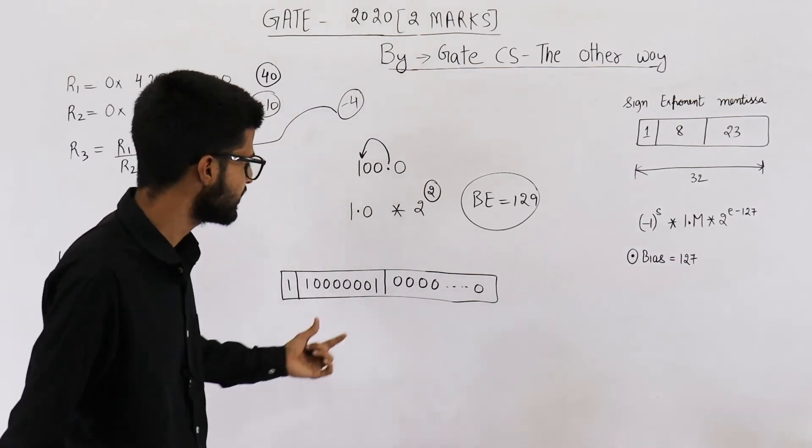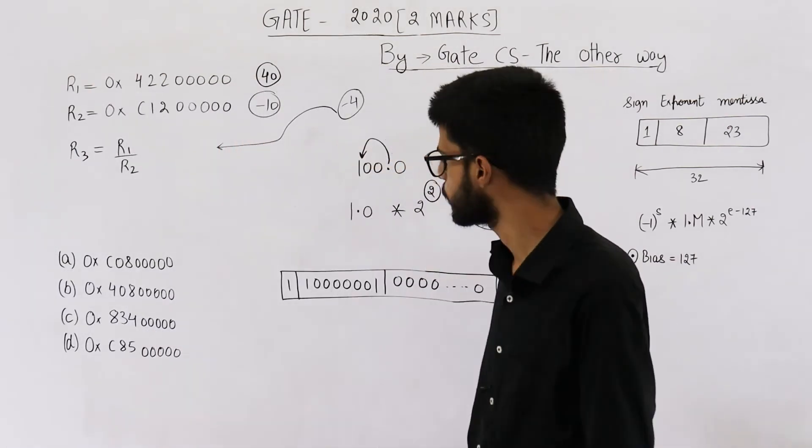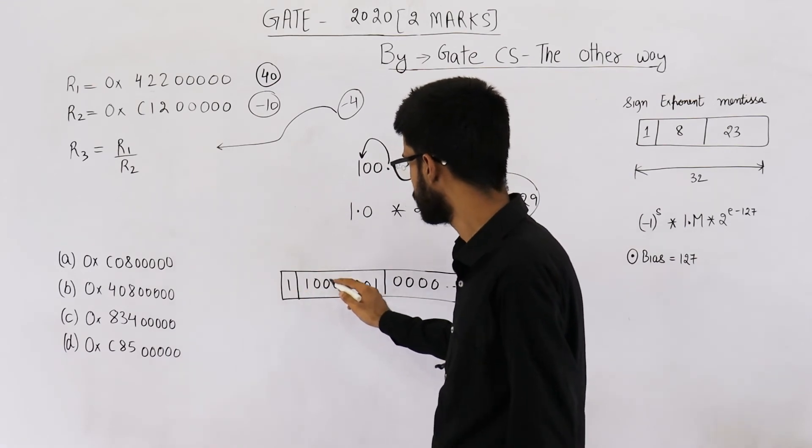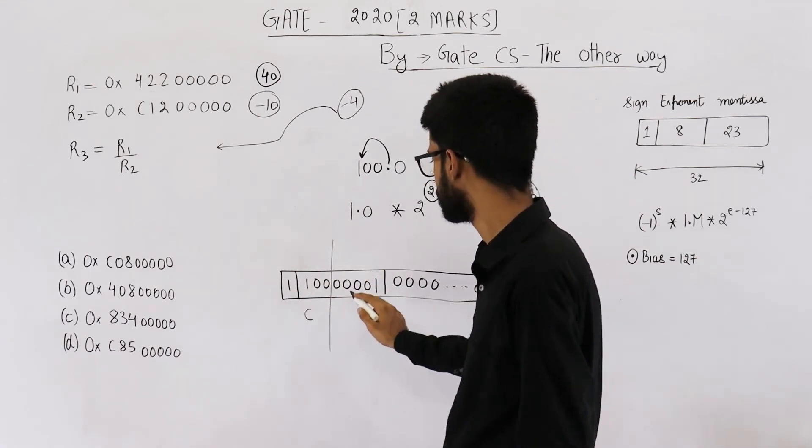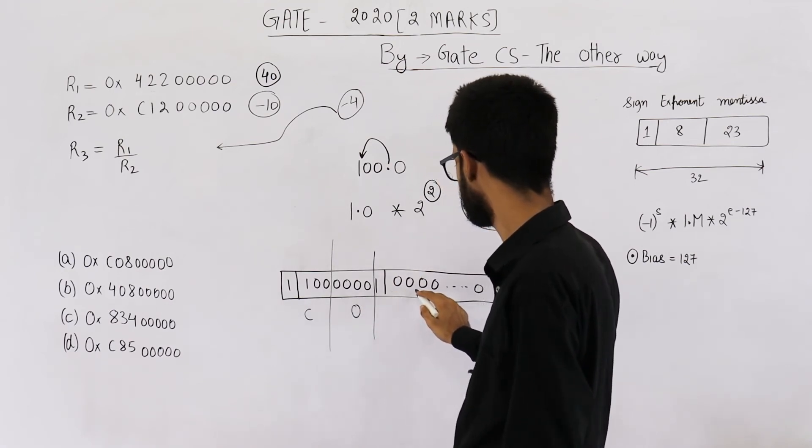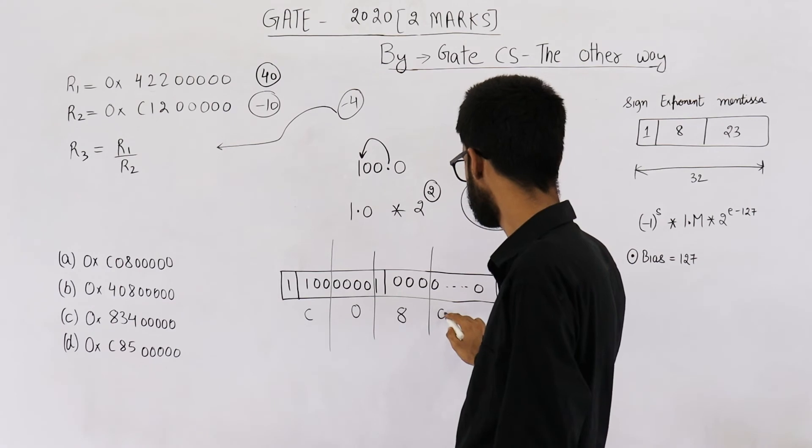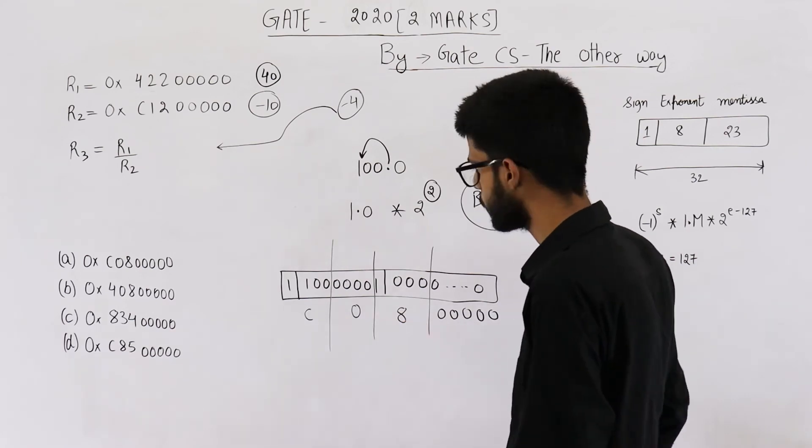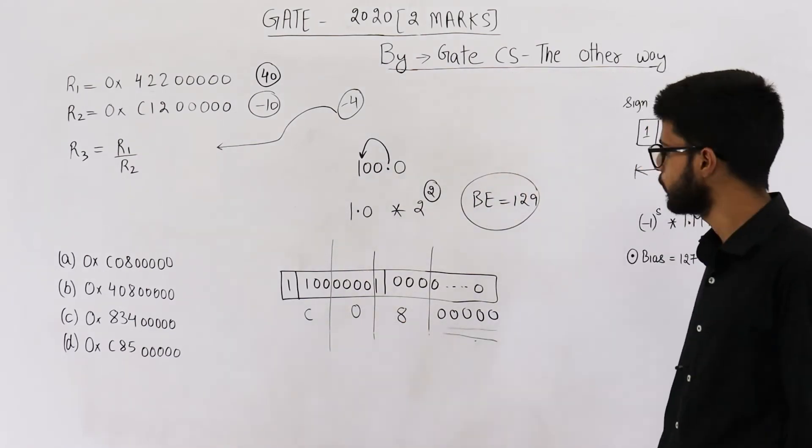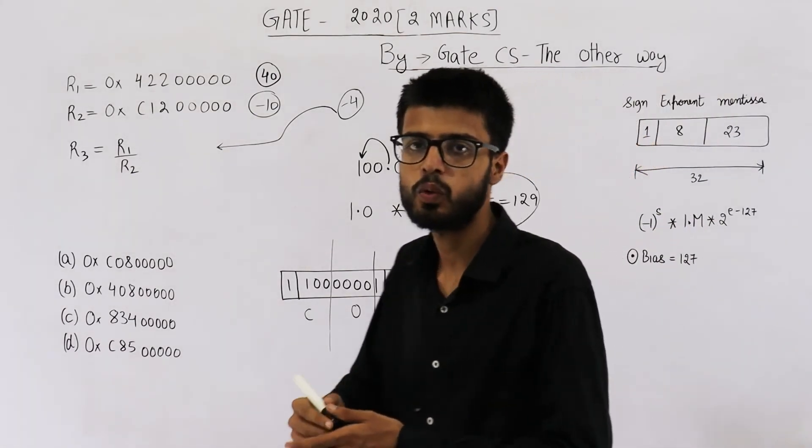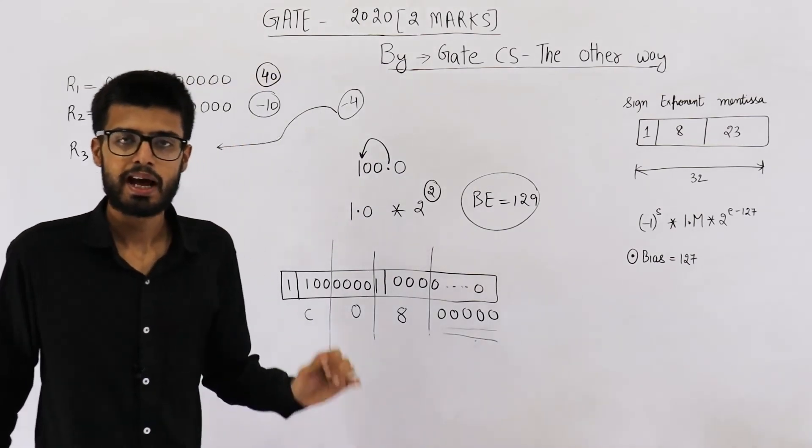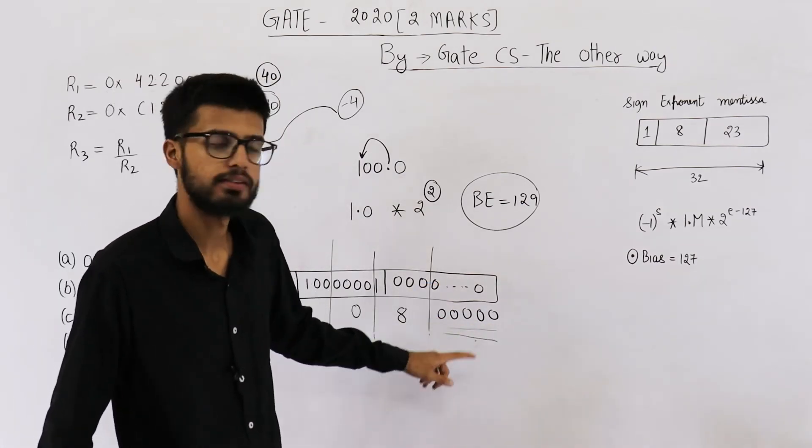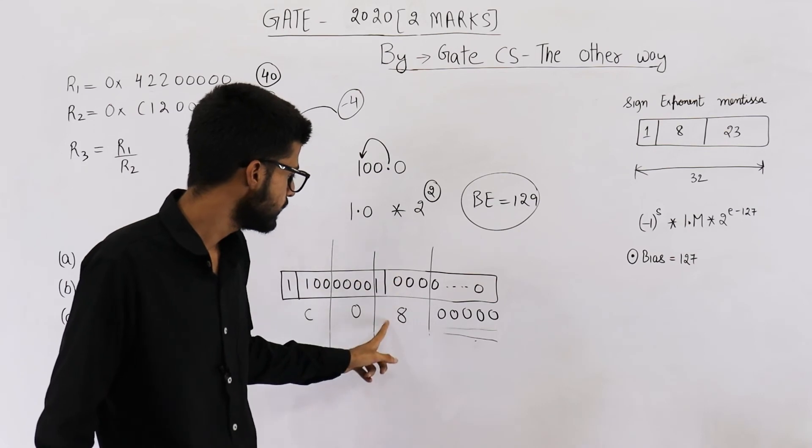Now we want to find its hexadecimal notation. For that, let's make groups of 4. You can start from any side because 32 is divisible by 4. So it will be C, 0, 8, 0, 0, 0, 0, 0, 1, 2, 3, 4, 5. Yeah, C08 followed by 5 zeros. How do I know we'll be having 5 zeros here? Because a 32-bit number when converted to hexadecimal notation will have 8 digits.